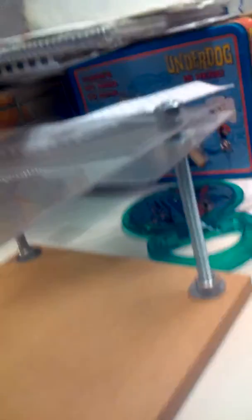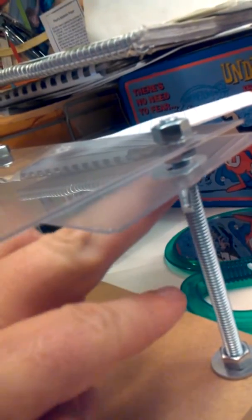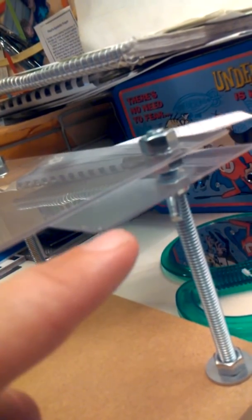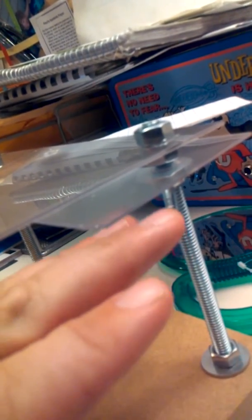And these little wing nuts right here raise and lower this specimen tray. That's where you put your specimen that you want to look at. It raises and lowers it, and try not to make you sick here.